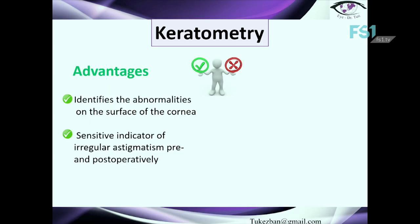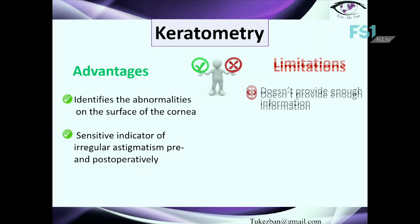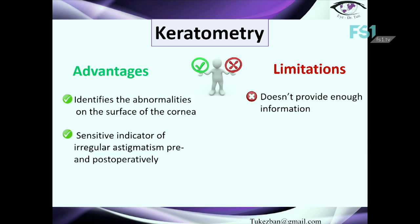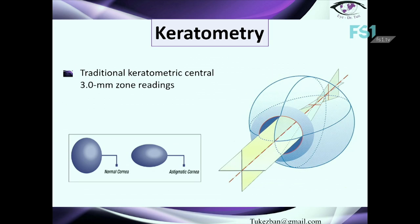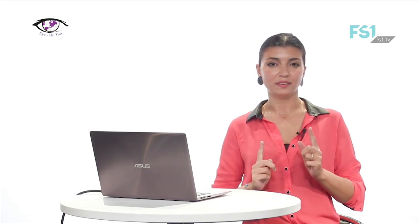Keratometry identifies abnormalities on the surface of the cornea and is a very sensitive indicator of irregular astigmatism, both pre- and post-operatively. Its limitation is that it doesn't provide enough information on its own. Specifically, keratometry gives us information about the central part of the cornea — it describes the keratometric power within the central 3 mm area, which is also referred to as the corneal cap or central cap.